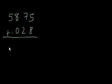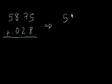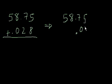I think you realize why you'd be wrong — you forgot the first step. The first step is to line up the decimal points. When you're doing addition with decimals, the number one step is to line up the decimal points. So let's rewrite the top number: 58.75. Now let's rewrite the bottom number with the decimal point aligned below: 0.028.